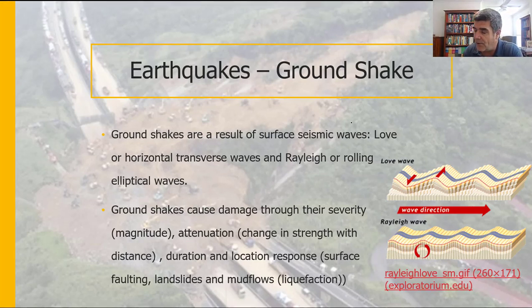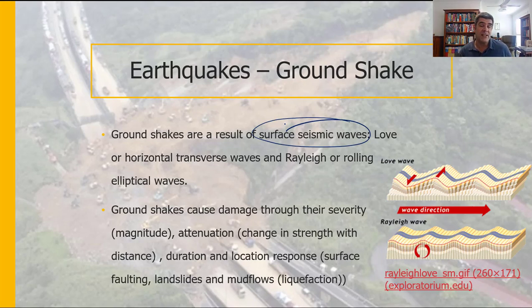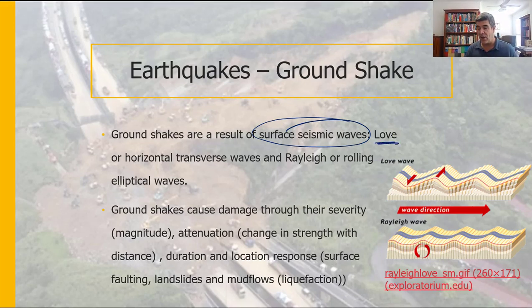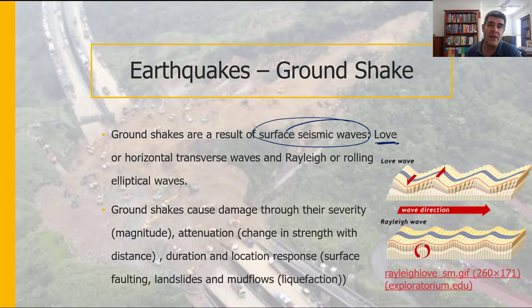Ground shakes are the result of surface waves. We looked at the three different types of seismic waves — P waves and S waves, the primary and secondary waves, which radiate out from the focus of the earthquake. Then there are surface waves, which come in two different types, often referred to as L waves. There are Love waves, which have a horizontal transmission, and also Rayleigh waves, which are more like rolling elliptical waves.